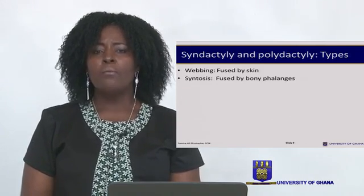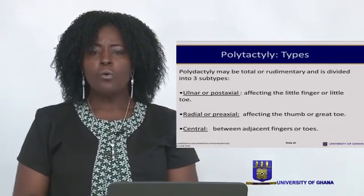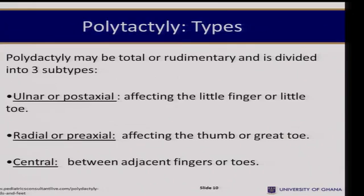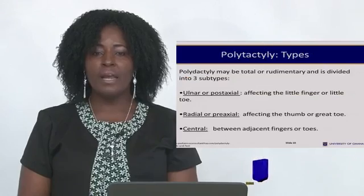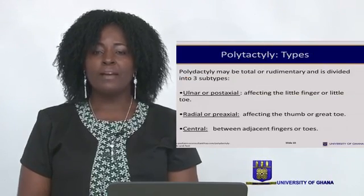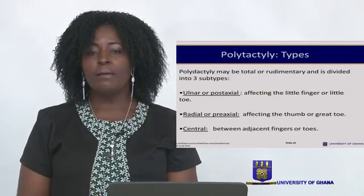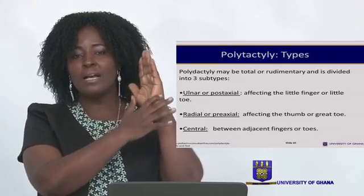We may have total or rudimentary types. There are three main subtypes: the ulnar or post-axial type, which affects the little finger or little toe; and the radial or pre-axial type, affecting the thumb or the great toe. When it is ulnar or post-axial, it is the lateral side of the hand.